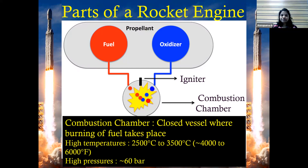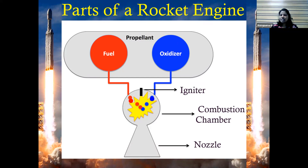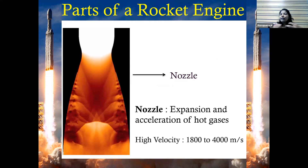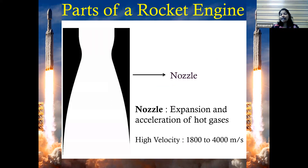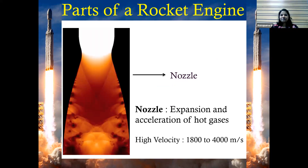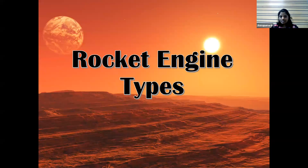Once the combustion chamber produces hot gases, those gases are passed to the nozzle, where expansion takes place and the gases are accelerated. This is where we get the high velocity from the rocket — as high as 1800 to 4000 meters per second, which is almost 11 times the speed of a bullet. These are the basic parts of the rocket engine.